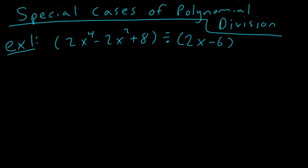Welcome to Special Cases of Polynomial Division. For example number 1, we have 2x to the 4th minus 2x squared plus 8, which will be divided by 2x minus 6. Now notice, we're actually going to have something kind of interesting here. Why is this considered a special case? Well, when you look right here, I want you to ask yourself: what's missing?